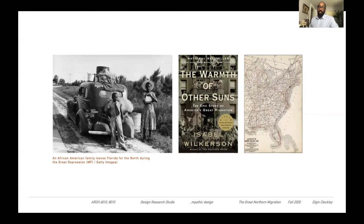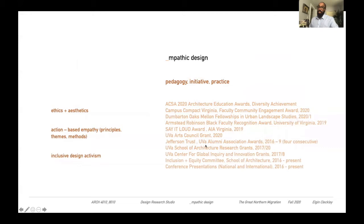Wilkerson's book, The Warmth of Other Suns, which you see here, will be our primary text for the studio. It's filled with empathic stories of the migration itself, and we'll focus on the eastern path of the three paths of the migration. We'll go up the east coast heading from the south — from Florida, through the Carolinas, up to Virginia, and up to New York City.